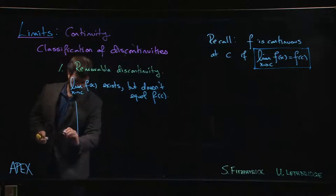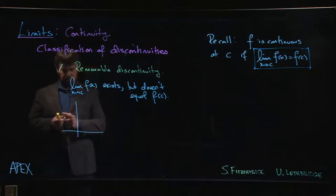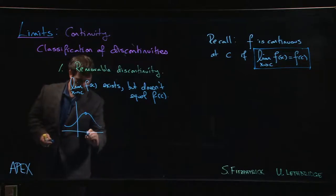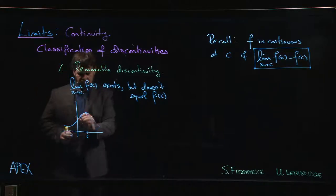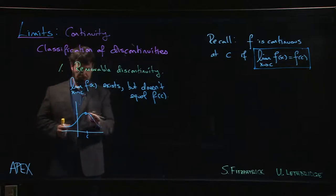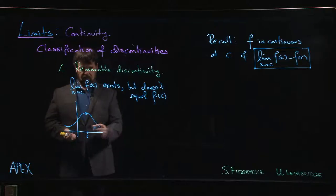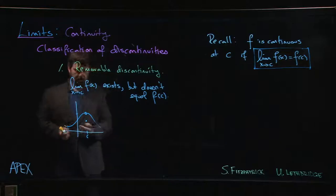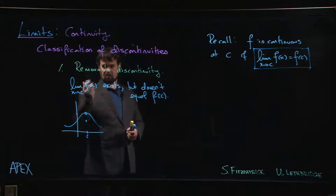We might have a graph that looks something like this—maybe we have a function where there's a hole in the graph at x equals C. The limit exists because the function is defined everywhere near the point. We have a well-defined y value that is approaching from either side, but f of C is undefined or maybe f of C is defined but doesn't agree with the limit. This is called the removable discontinuity. It's removable in the sense that if we just redefine it at that one point, the function does become continuous.